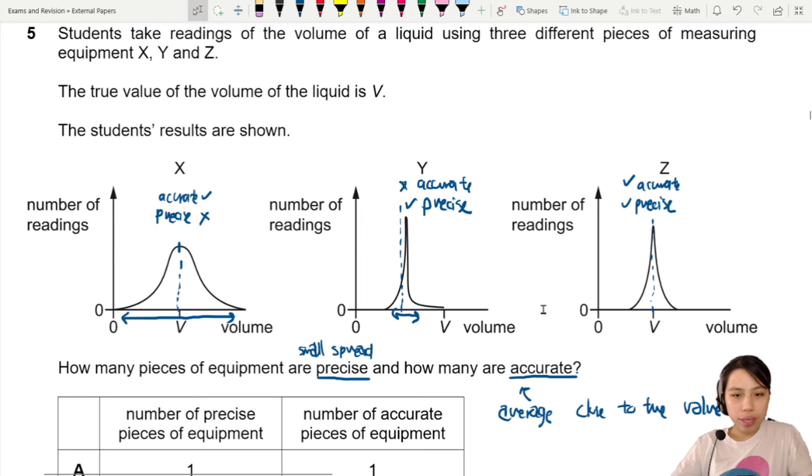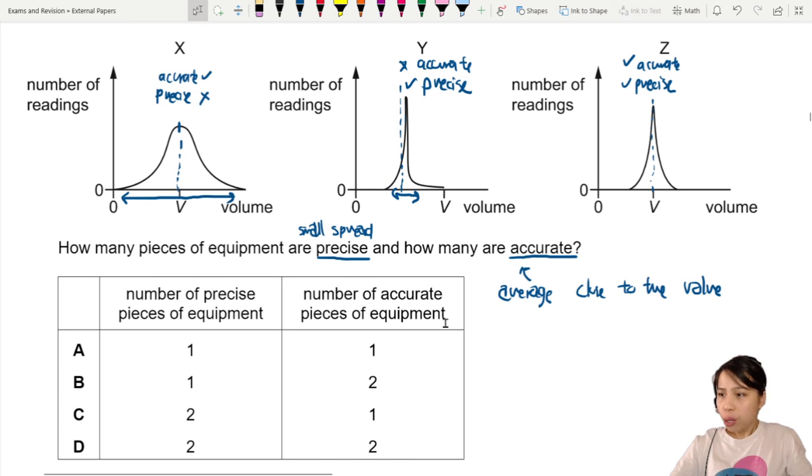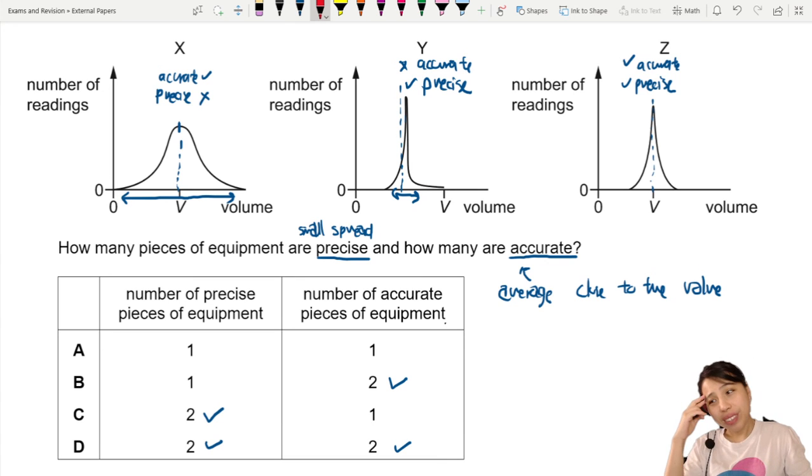So let's total it up and see how much do we think was accurate and precise. So accurate, I think we have two. One, two. Precision, I think we'll have two as well. So these two. So I think based on this graph analysis of the results, I think we would go with D for our case here. And that would be the answer.